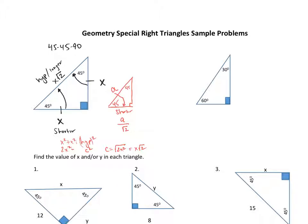Moving on to the 30-60-90 triangle. Most books call it the 30-60-90, but in my classroom I like to say 60-30-90. The reason is we're going to ignore the 30 for now — everything revolves around the 60 and the 90. Think of it as the two angles right next to each other with the shorter side. That's what we're going to focus on.